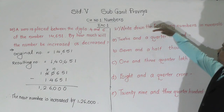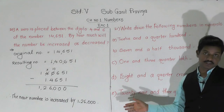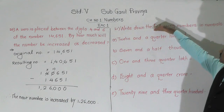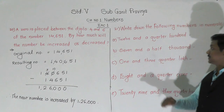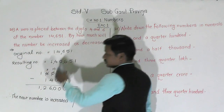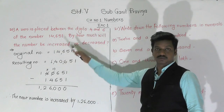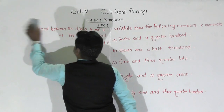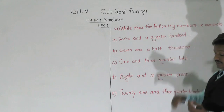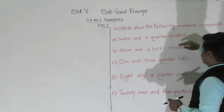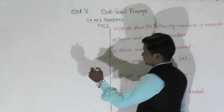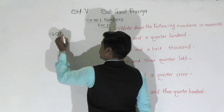Question number 21: Write down the following numbers in numerals. The first example is '12 and a quarter hundred.' The meaning of this is 12 hundred and a quarter hundred. 12 hundred is written as 1200. Now, a quarter hundred — quarter means one fourth.